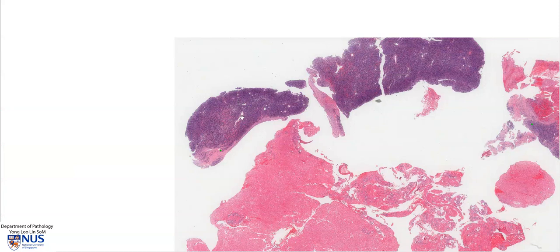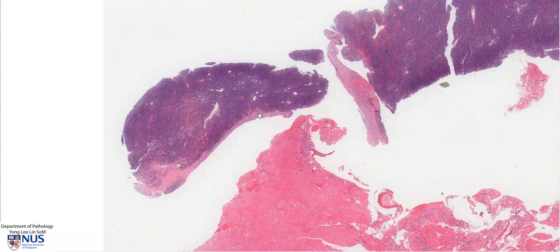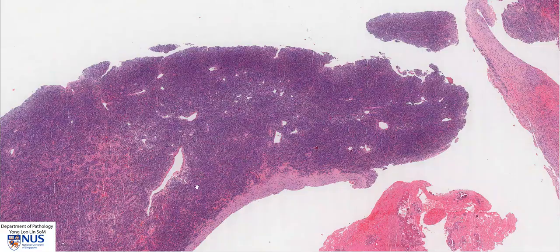Plasma cell myeloma comes from a spectrum of plasma cell neoplasms. In myelomas, these tumors are multiple and they involve the bone marrow. However, there can also be sometimes solitary tumors, and these are known as plasmacytomas. These plasmacytomas can be in the bone or they can be extra-osseous. This is taken from a case of multiple myeloma rather than a plasmacytoma.